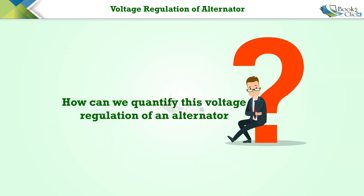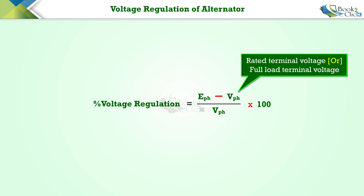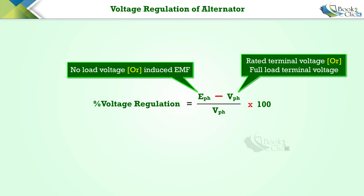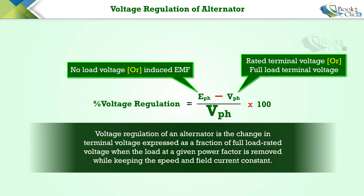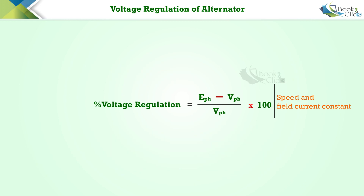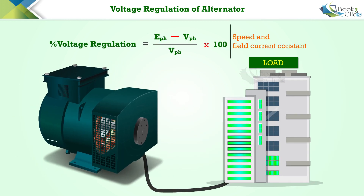So how can we quantify this voltage regulation? We have a formula to calculate it. The voltage regulation of an alternator is the change in terminal voltage expressed as a fraction of full load rated voltage, when the load at a given power factor is removed while keeping the speed and field current constant.